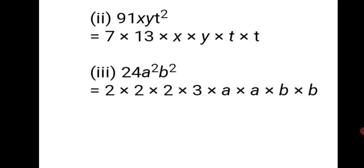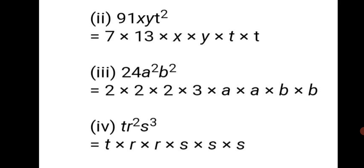Question 4, the last question: tr²s³. Here t has no power, so we write single t. r² is written as r × r, and s³ means s is raised to the power of 3, so we write s three times. The final answer is tr²s³ = t × r × r × s × s × s.